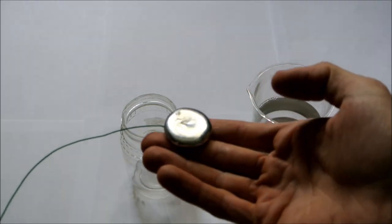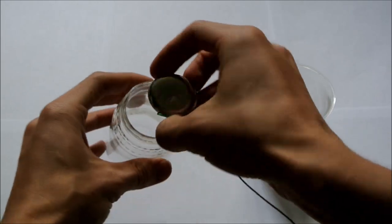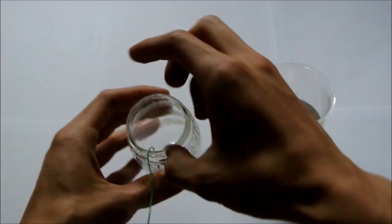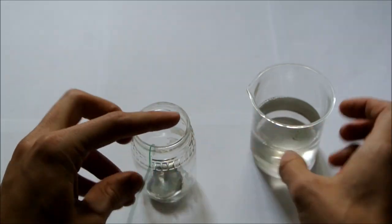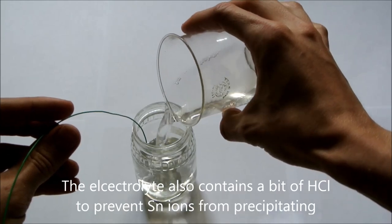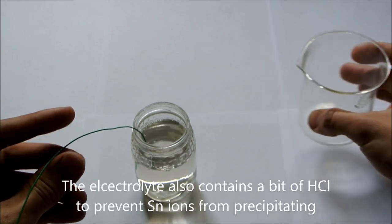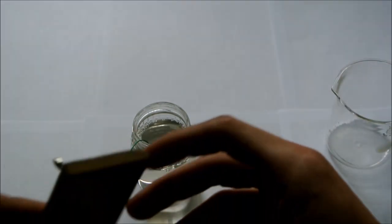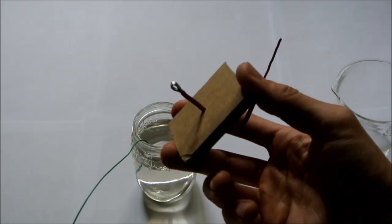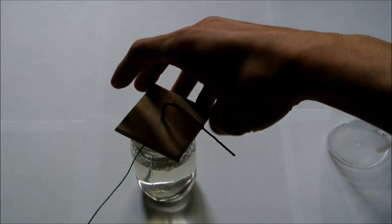This is the tin anode I just showed the casting of. So this will go straight in the bottom, just like that. And the tin electrolyte will go right above it. And then to top it off, I have the tin cathode where the tin crystals will be deposited. That will sit right on top just about like that.